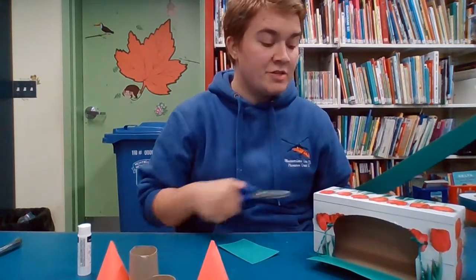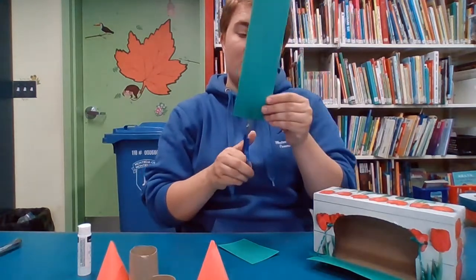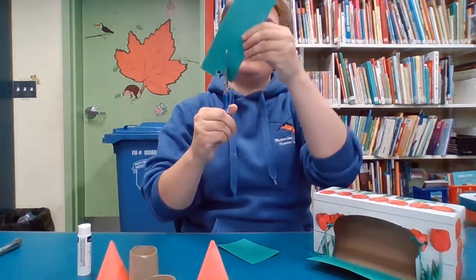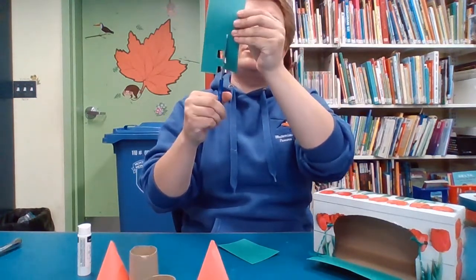Next we can make the edge around our castle. You're gonna need the other strip of paper and some scissors, and you're just gonna cut out squares back and forth like this so it looks like teeth.